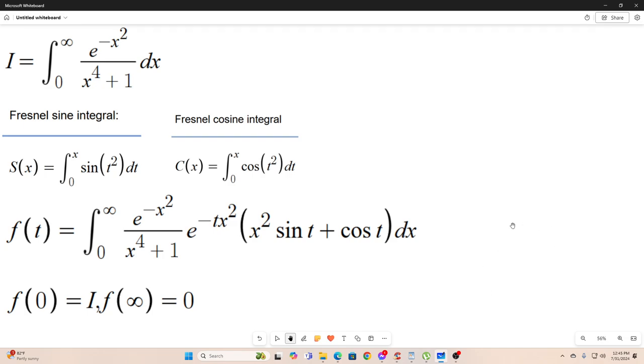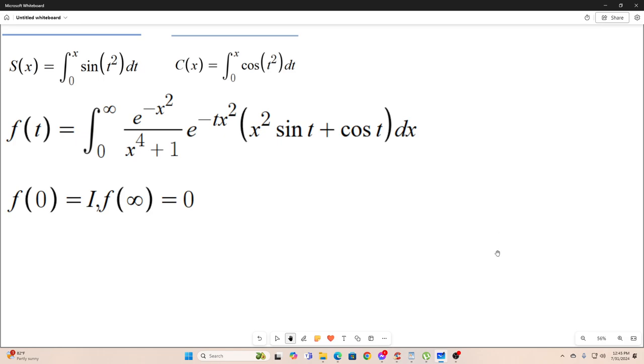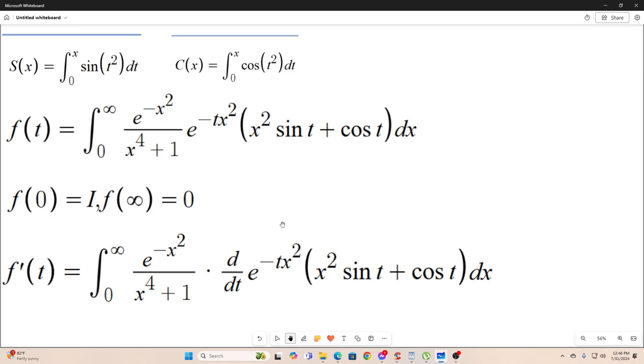All right. So before we go any further, let's notice that if we evaluate our function of t at the point t equals zero, we will recover our original integral because this will become one, this will become zero, and this will become one. So we'll just have one times one times our original integral. And if we evaluate it at the point t equals infinity, this will eventually go, as t goes to infinity, this thing goes to zero. So we have that.